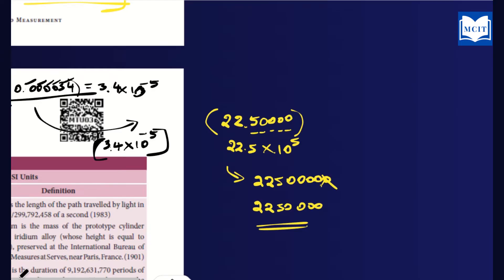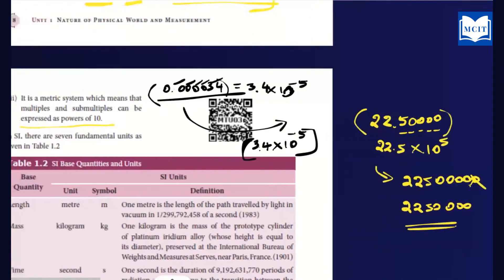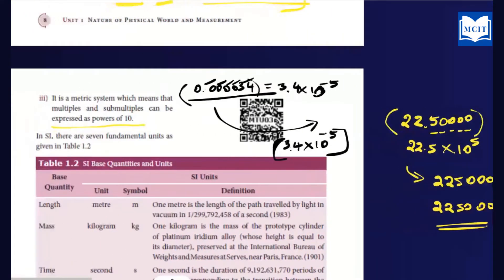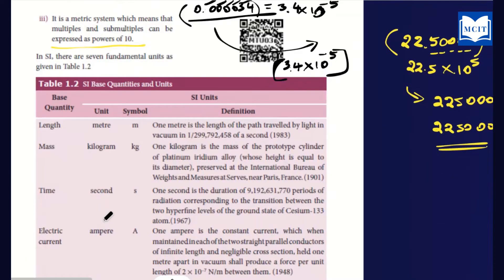If you understand this, it will help you in 11th and 12th standard physics. We will follow this and do calculations. This is one basic concept to understand. These are the advantages of the SI unit — three advantages in total. There are 7 SI fundamental units.